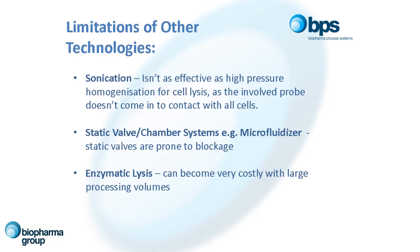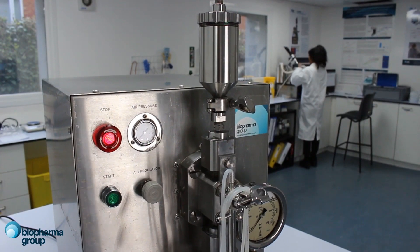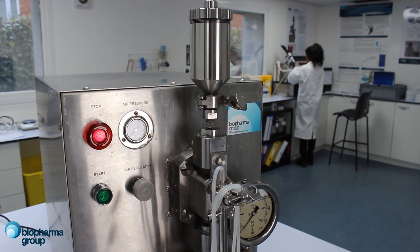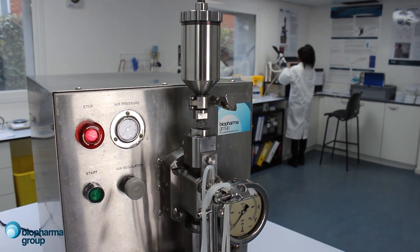High pressure homogenization can be more effective than sonication or enzymatic lysis due to higher protein yields, but also in terms of cost as you scale up — things can become costly on the sonication and enzymatic lysis side. So in terms of efficiency and ease of use, homogenization is far more efficient.